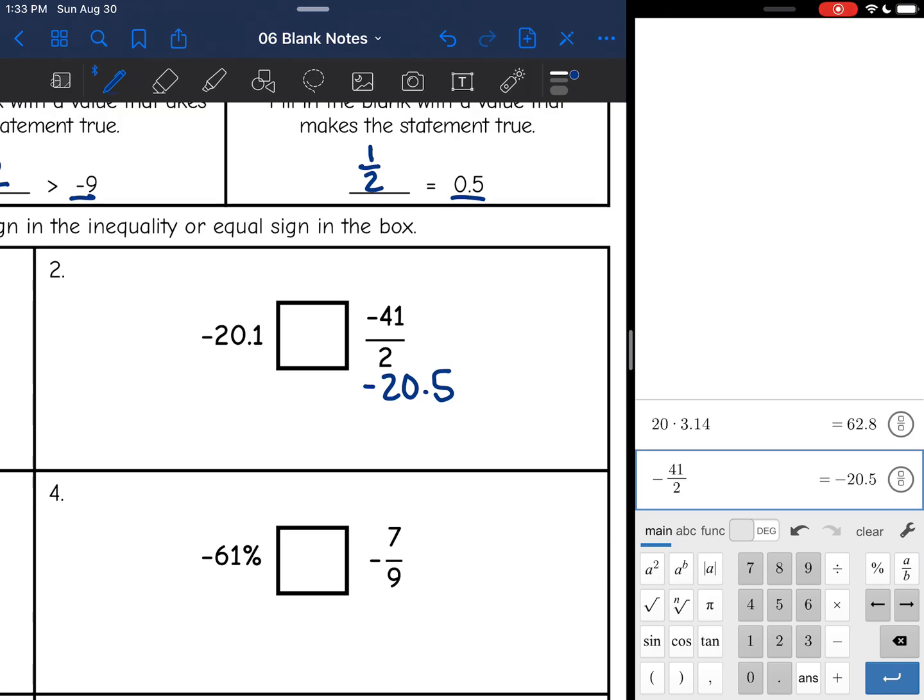They are backwards. This right here is the larger number because it is closer to zero. This is the smaller number because it is more negative. I would rather owe someone $20.10 than owing them $20.50. That's another way you can think of it. So since this is larger, I'm going to put the greater than sign there. And it would read negative 20.1 is greater than negative 41 over 2.